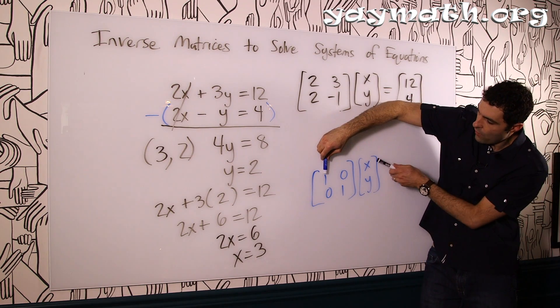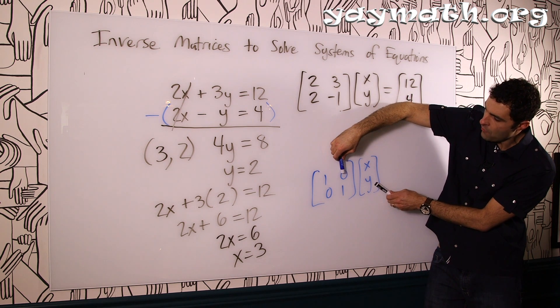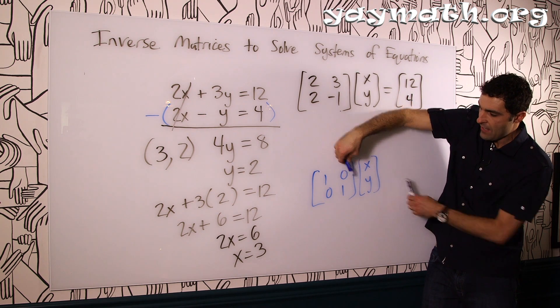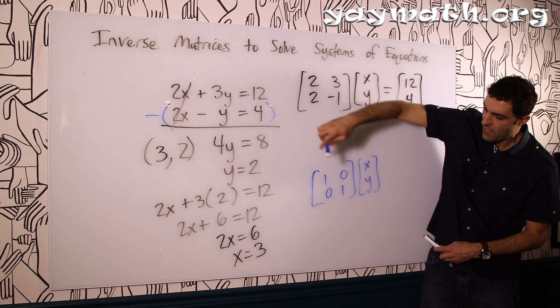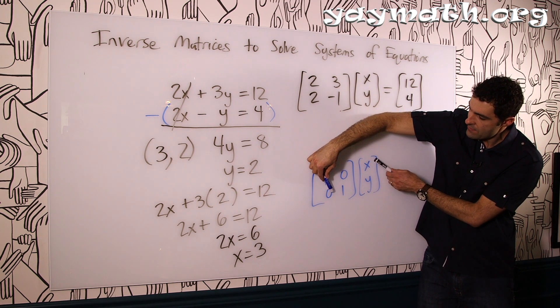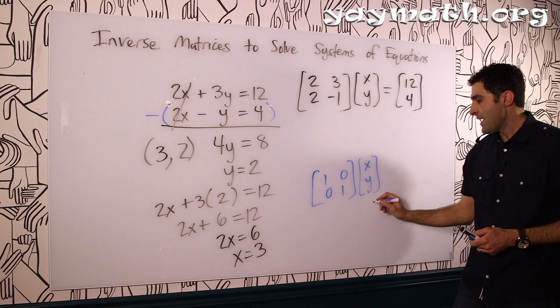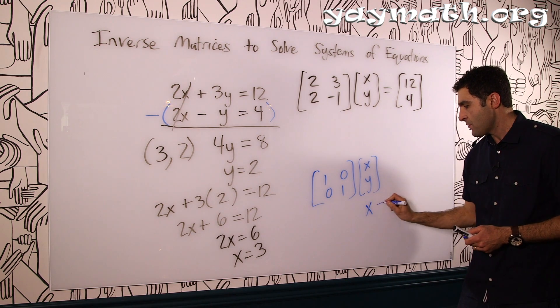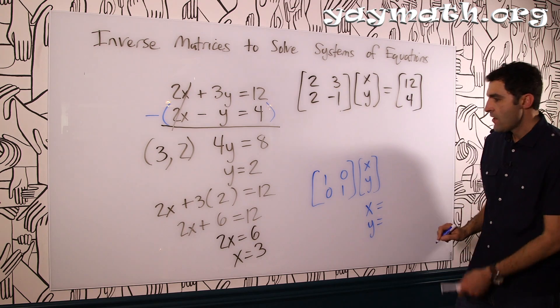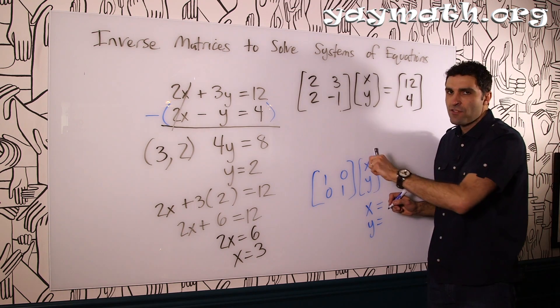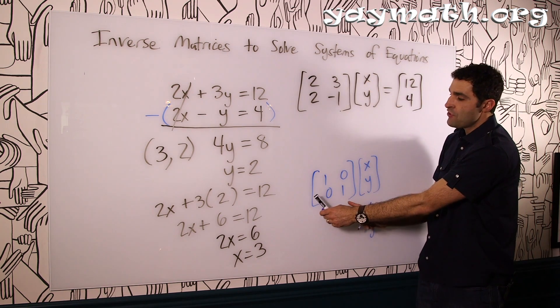That's just basically x. And then you go through the next row and column, 0x plus 1y is y. So this basically ends up just being x equals and y equals. We want to get rid of this 2 by 2 such that it turns into the identity.